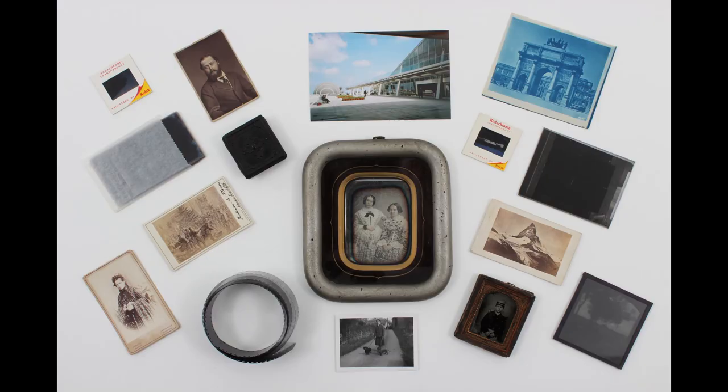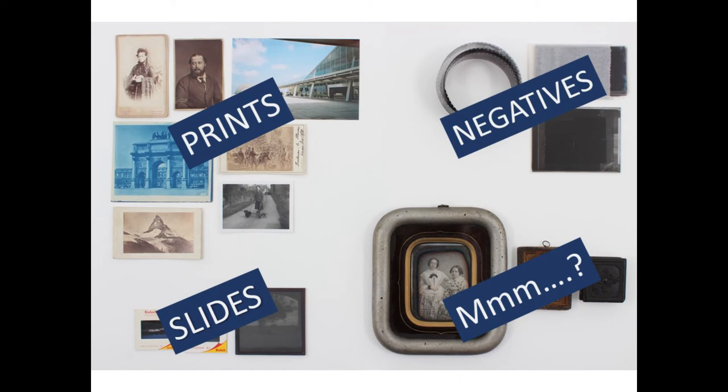The items you see here are typical of what such a collection might contain. The first reaction when you get a collection like this is probably to start thinking in boxes, where you've divided the collection up into prints, negatives, slides and others — and the others will usually include Daguerreotypes, Ambrotypes and Tintypes.